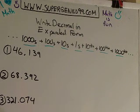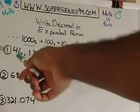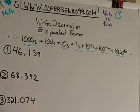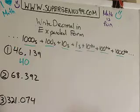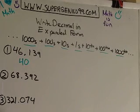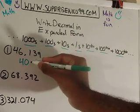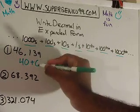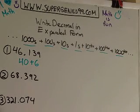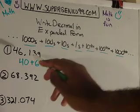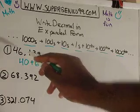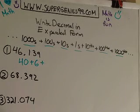For the first one, the highest place value is tens, so I'm going to write the four in the tens place — that would be 40. And then the next place value is the six, and that's in the ones place, so I'm going to write it like that. And then I'm not going to put a decimal, but I'm going to put plus. And then here — this one is in the tenth place, so I'm going to put the one over ten.